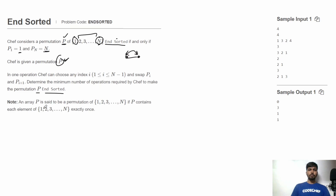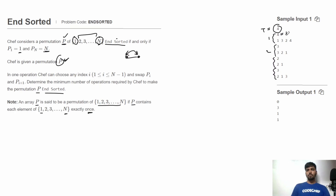P is a permutation of numbers 1 to N, meaning P contains each and every element from 1 to N exactly once. In the input, we first get the total number of test cases T. For each test case, we get two lines: the first line gives N, the size of the sequence, and the next line gives the numbers in the sequence. For the first test case, N is 4 and P is 1 3 2 4.